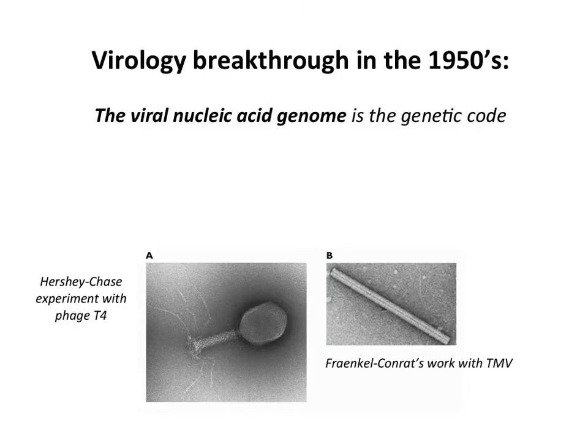In the 1950s, the breakthrough in virology was the demonstration that the nucleic acid of the virus is the genetic code. And even though this sounds obvious today, it wasn't back then. People thought that the proteins, in fact, might be the important parts because they were so much more complicated. Nucleic acids were simple — they only had four different chemicals in them.